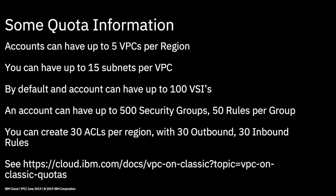At the account level, you can have up to 500 security groups, with up to 50 rules per group, allowing you to get quite granular with your virtual firewalling. In terms of ACLs, you can have up to 30 per region, each with 30 outbound and 30 inbound rules, enabling quite complex and tight security rules.